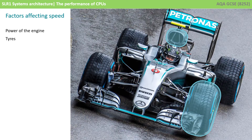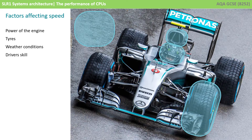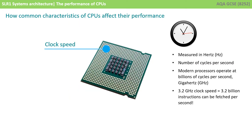What else have we got? Well, we've got the tyres, which will have a big overall impact on the speed of our racing car. We've got the weather conditions. We've got the driver's overall skill. We've got the aerodynamics of the racing car. As you can see, there are lots of factors which determine the overall speed of a racing car in any particular race. In a similar way, the performance of the CPU is affected by various factors.